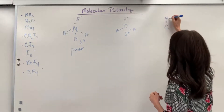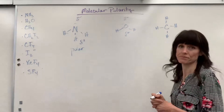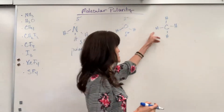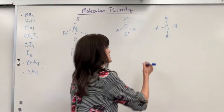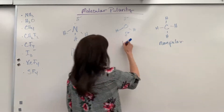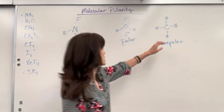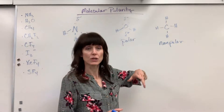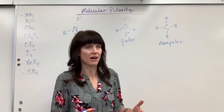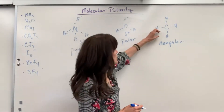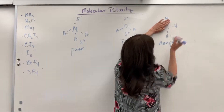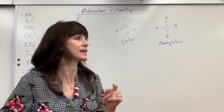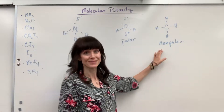Let's do methane. I've got my carbon with four bonds to hydrogen. Number one: no lone pairs. So I go to my second question — is it symmetrical? Are all the atoms attached to that central atom the same? Yes. So this is a non-polar molecule. Those electrons from the carbon and the hydrogen share equally, spending equal time between the two atoms, so there's no partial positive or negative — no charge at all. The electronegativity difference between carbon and hydrogen is so similar that we would say that's a non-polar bond.